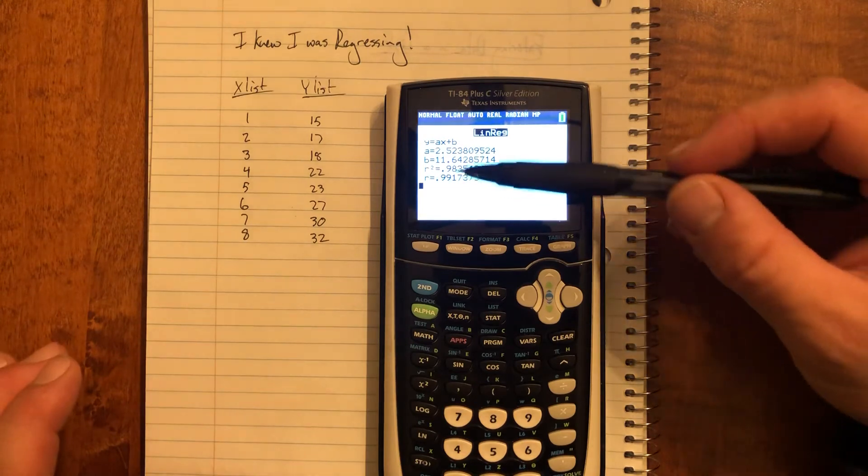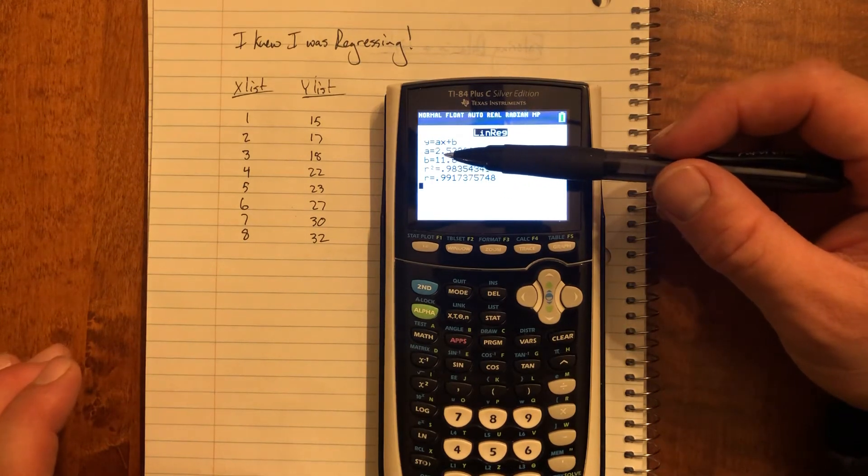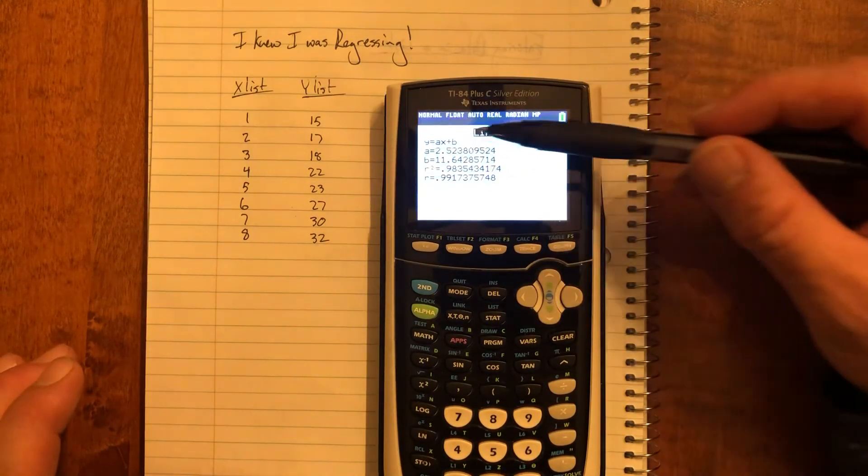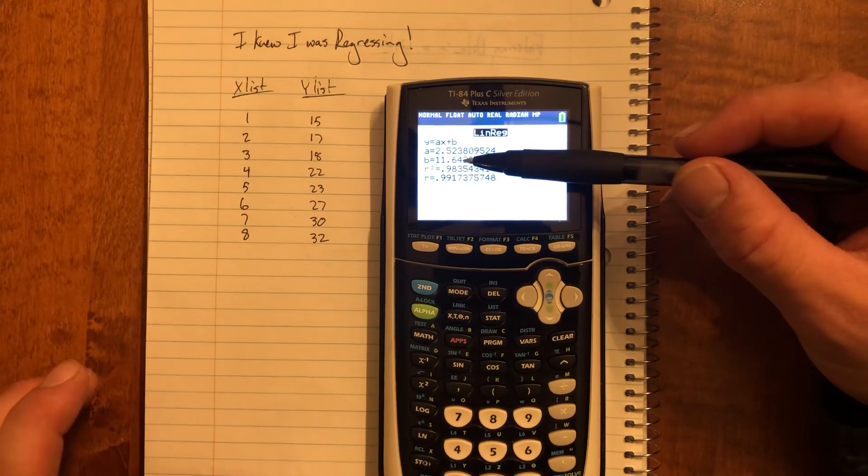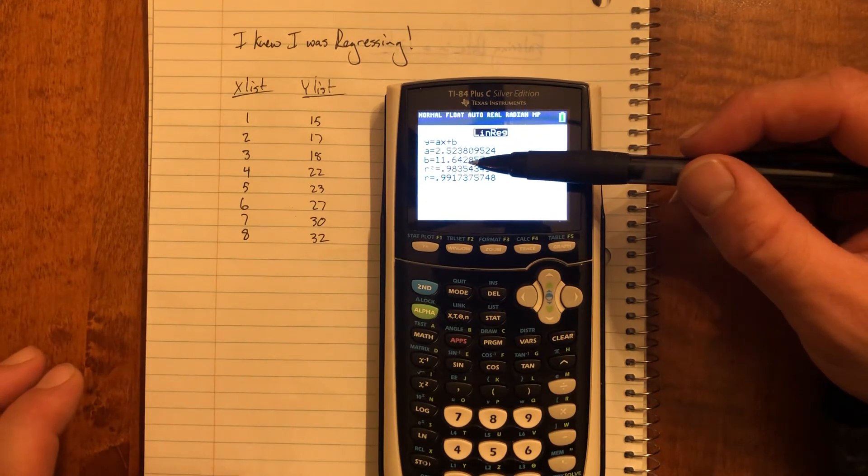Now it'll do its calculation and it'll spit off a number of things. So it says to me that a, my slope, is around 2.523. My y-intercept is around 11.64.